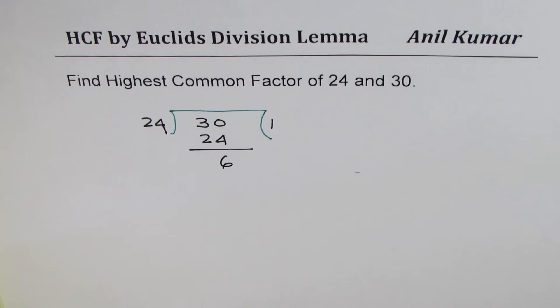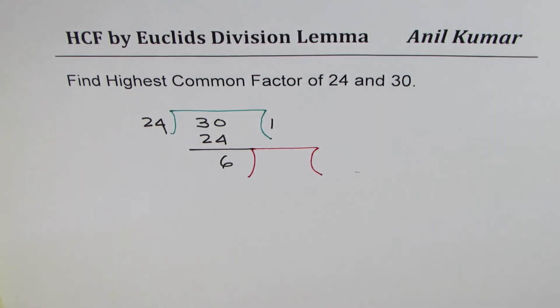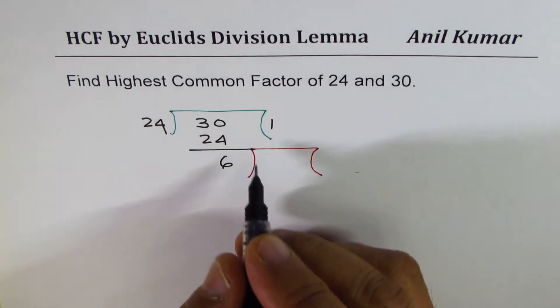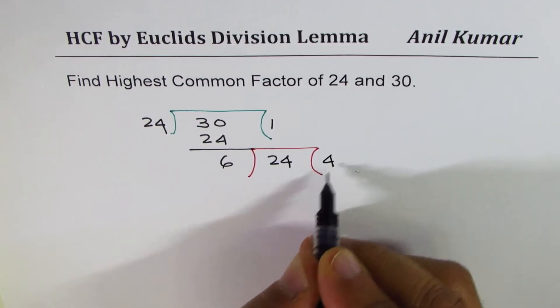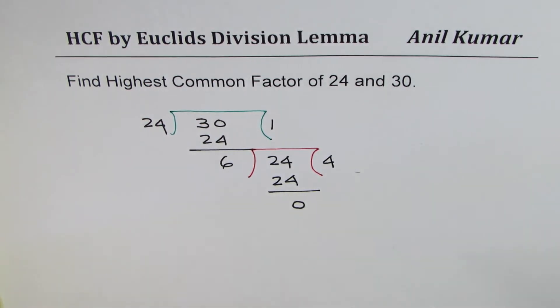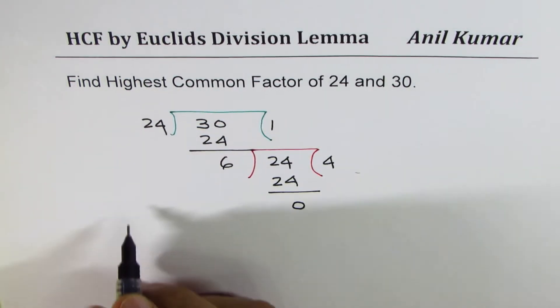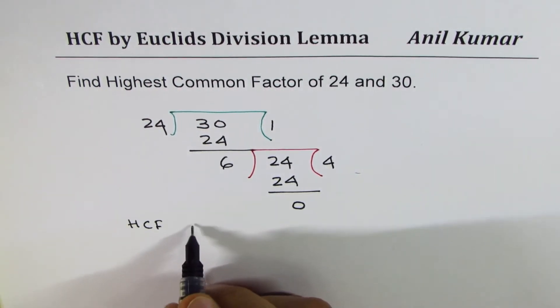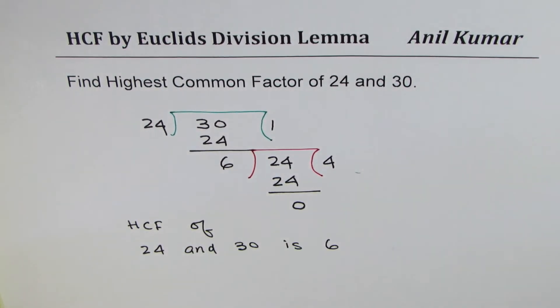Once you get the remainder, then divide the previous divisor by the remainder. The previous divisor was 24. And 6 times 4 is 24. You get 0 as the remainder. Since you get 0 as the remainder, 6 becomes the highest common factor. So the highest common factor of 24 and 30 is 6.